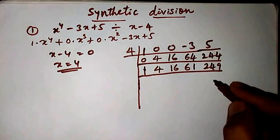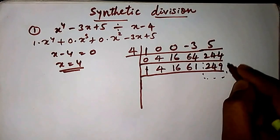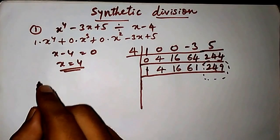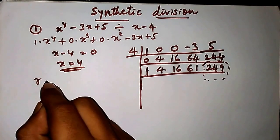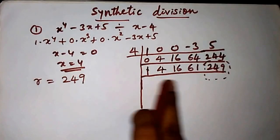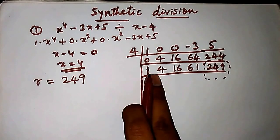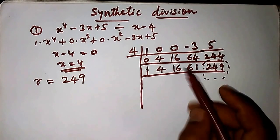This is what synthetic division gives us - the last number after addition is 249, which is the remainder. Whatever variables we got - 1, 4, 16, 61 - convert into the algebraic equation.